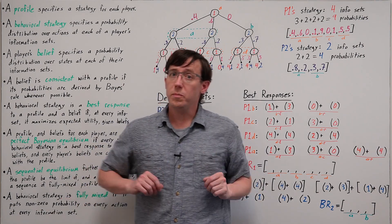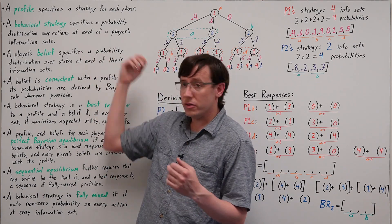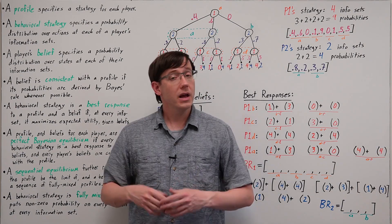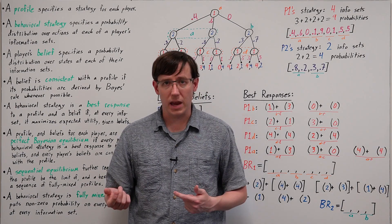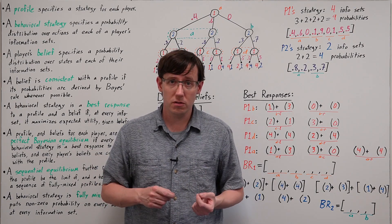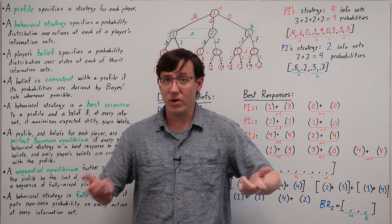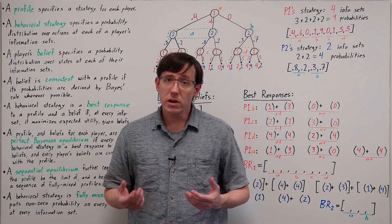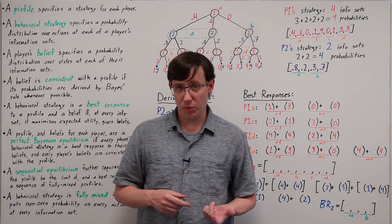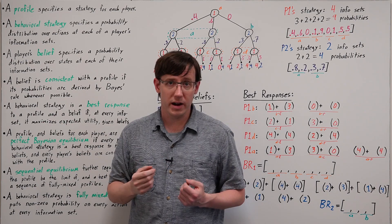So to begin with, let's think about what we mean by beliefs, and where they come from. As in most of our game theoretic solution concepts, we are looking for a strategy profile, and unlike complete information extensive games, where we know that the subgame perfect equilibrium will use pure strategies, in games with incomplete information the equilibrium profile may well involve randomization. But when looking for equilibria in sequential games, rather than thinking about mixed strategy profiles, it often helps to think about profiles of behavioral strategies.